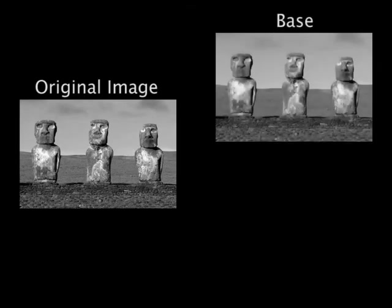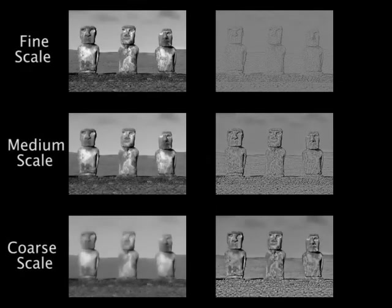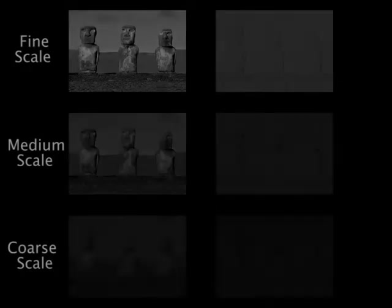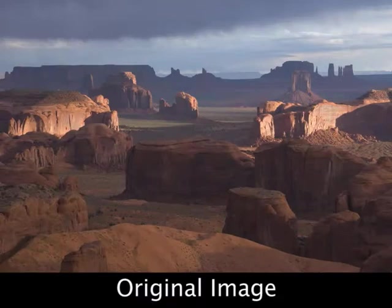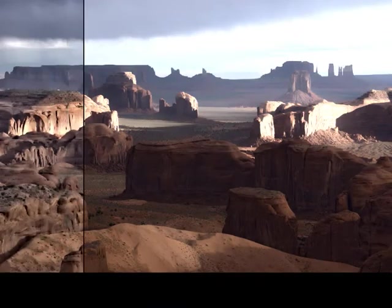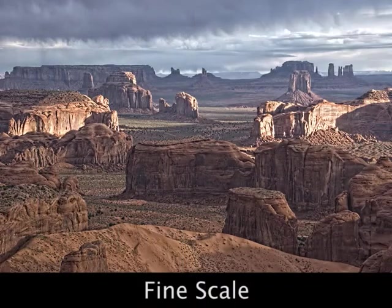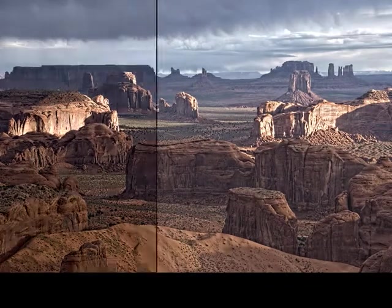Many computational photography applications decompose images into a piecewise smooth base layer and a residual detail layer. In this work we introduce a new way to construct such decompositions at multiple scales. For example, our decompositions may be used to manipulate detail and tone at different scales in order to increase clarity and add depth to photographs.